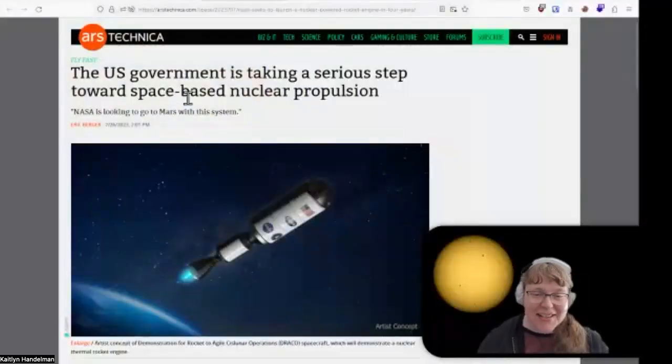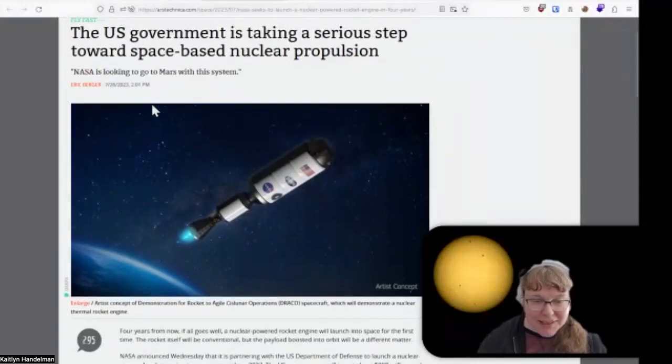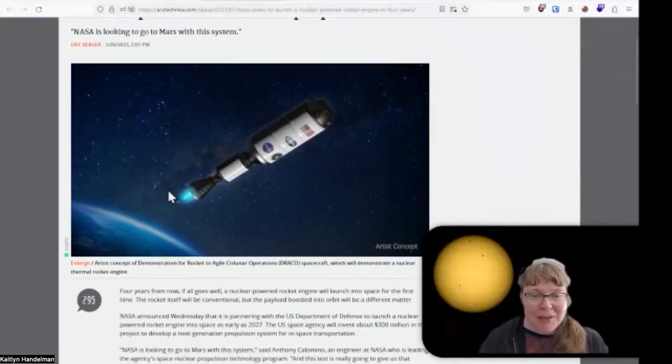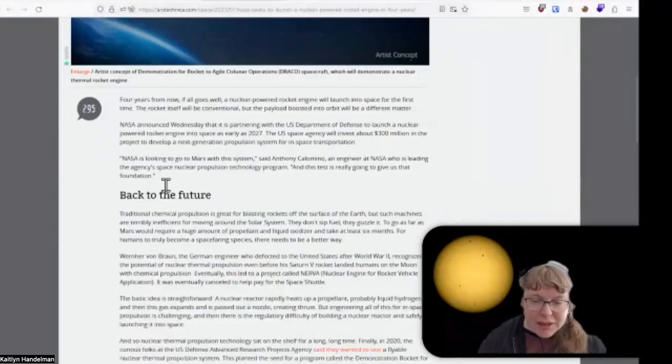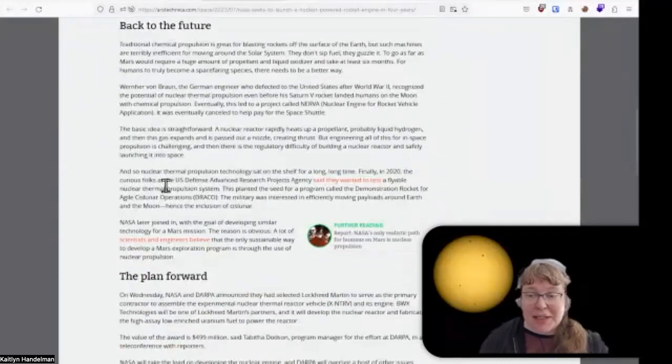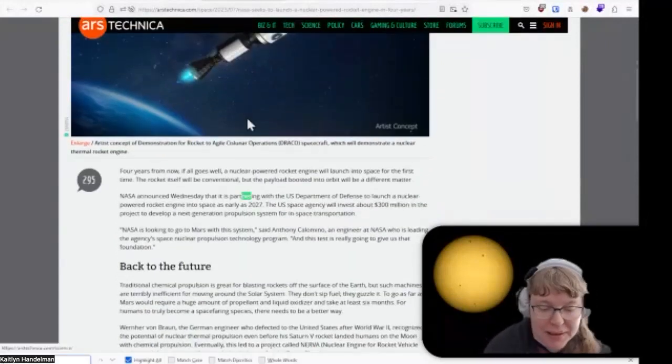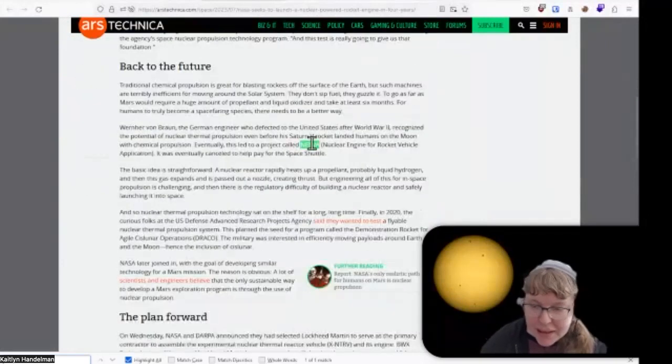So Ars Technica has this article written by, once again, Eric Berger. Thank you. Eric is always on our podcast. We love his articles. And so this goes back all the way to the NERVA project, which is the nuclear something, something, something, something. That's probably even in the article, if I find it. NERVA. Yeah, there it is. Nuclear engine rocket vehicle application.